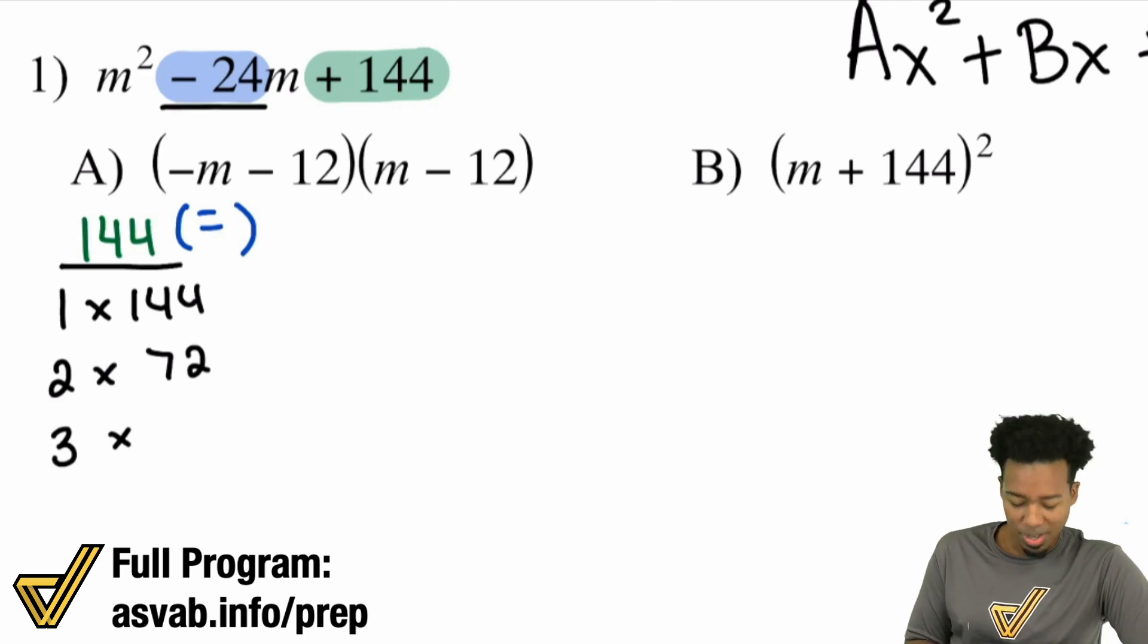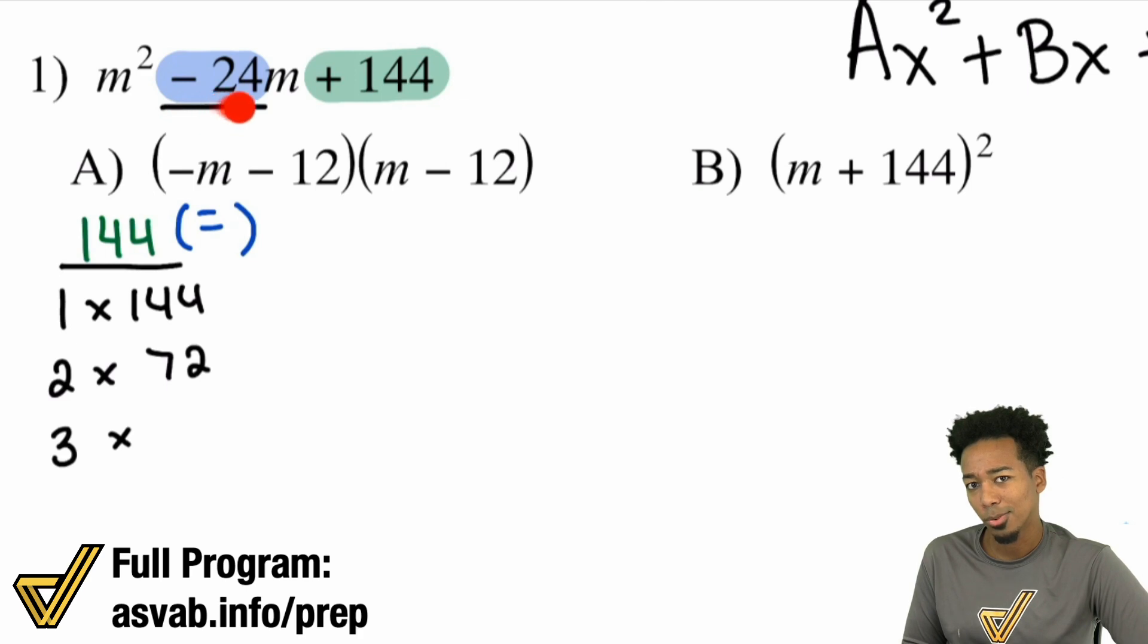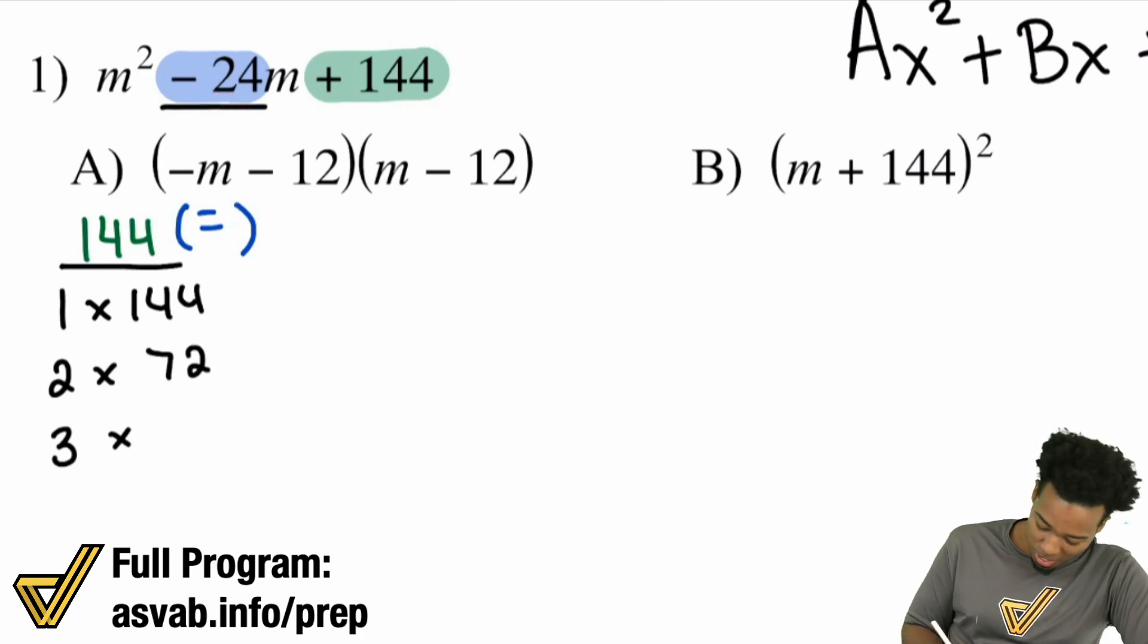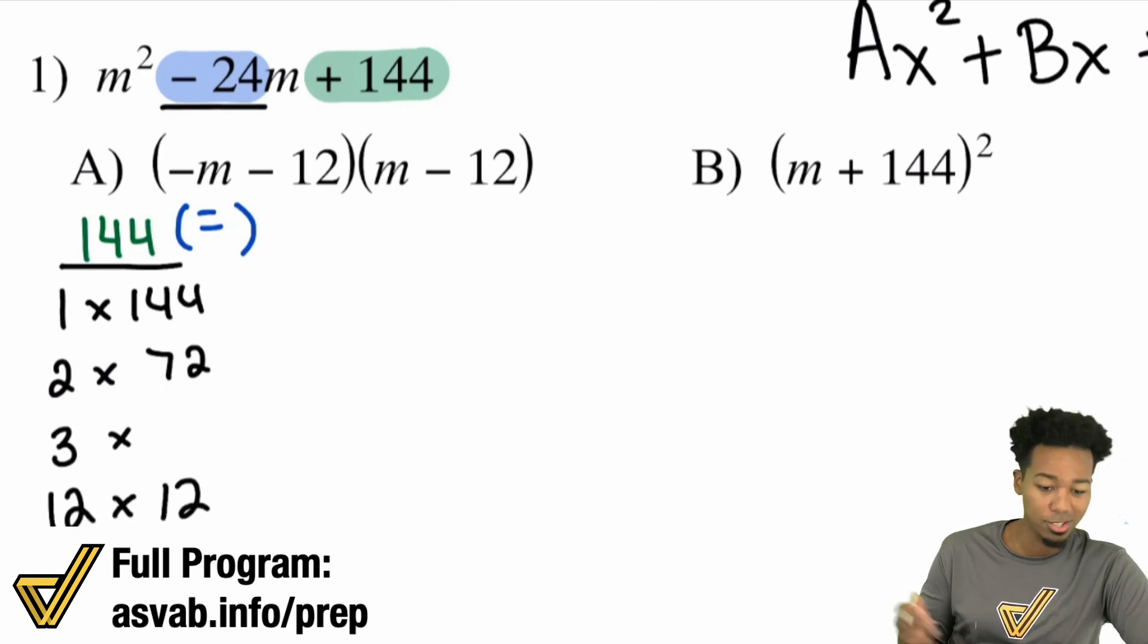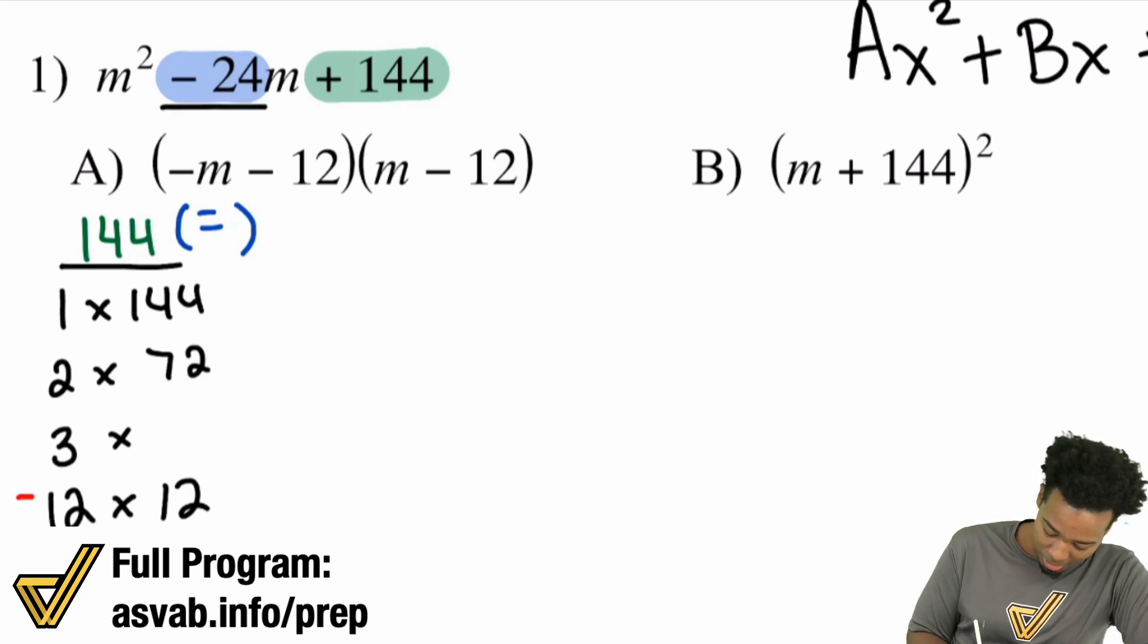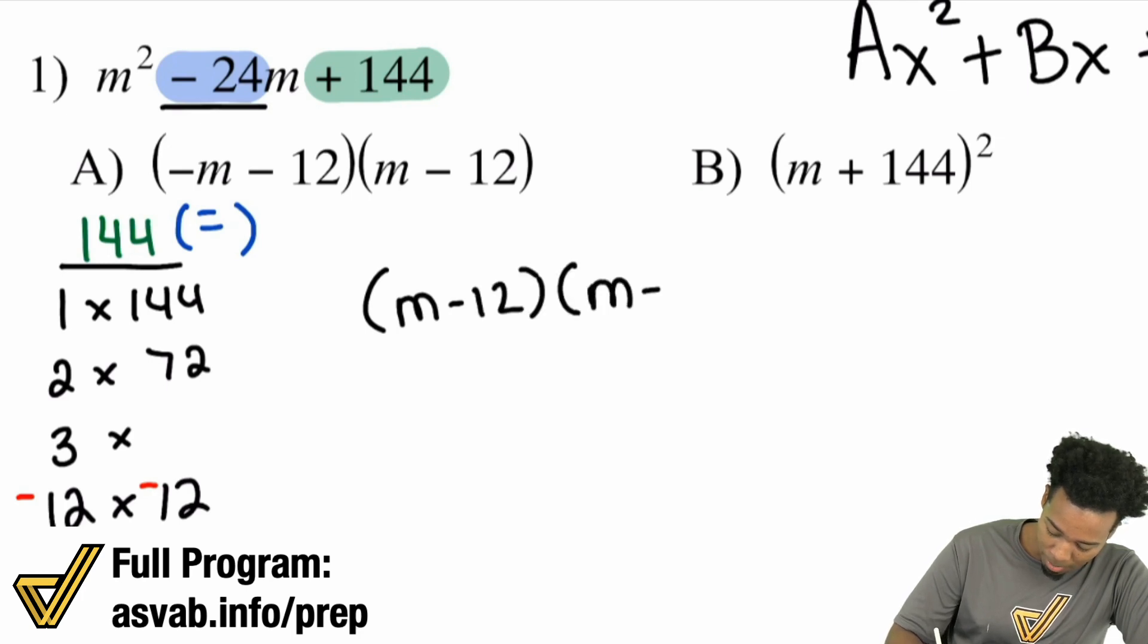Now, we said that they're both going to have to be negative. Is negative 12 plus negative 12 negative 24? It is. So we don't have to do all of this. We can just say, hey, look, 12 times 12 really honestly straight up works. And so what I can say is, again, they both have to be negative. And we can say we have M minus 12 times M minus 12.